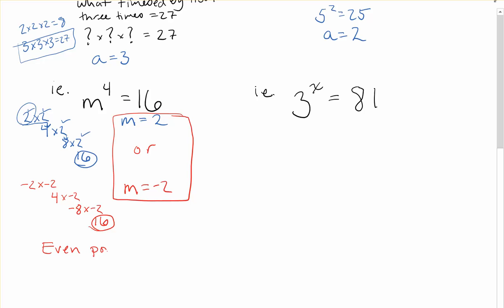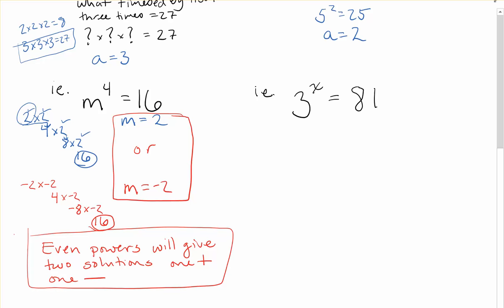Even powers will give two solutions: one positive and one negative. If you only find the positive solution, that's a basic level answer. If you recognize there are two solutions — one positive and one negative — because of the even power, you'll get more credit. Watch out for that, as it makes a distinction between a basic level and a higher level achievement.